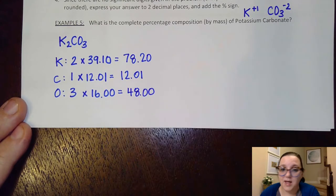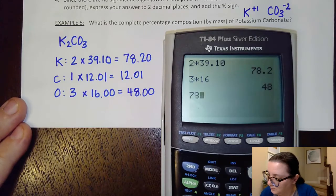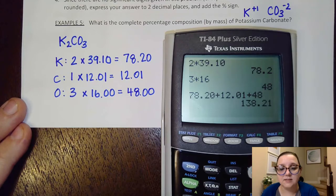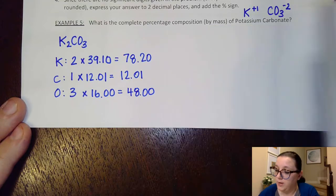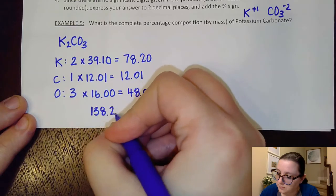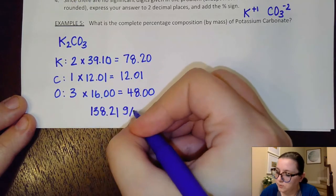So then I'm going to add all of that together. And I see that gets me a total molar mass of 138.21. So I'm going to write that down here. That's in grams per mole.